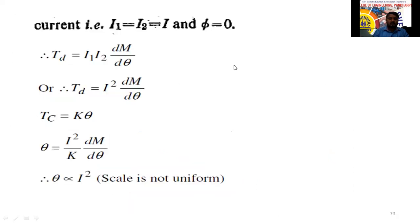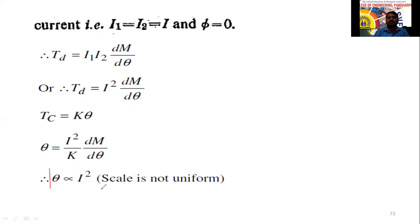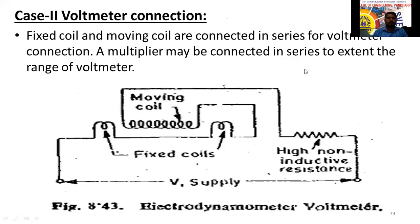For the ammeter connection, since I1 = I2 = I, the deflecting torque Td = I² × dM/dθ. From Tc = kθ, we get θ = (I²/k) × dM/dθ. This shows that for ammeter measurement, the deflection is directly proportional to the square of the current — confirming the scale is not uniform.